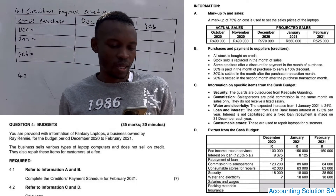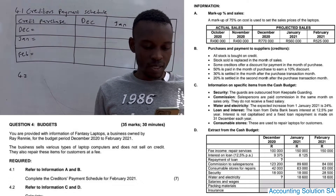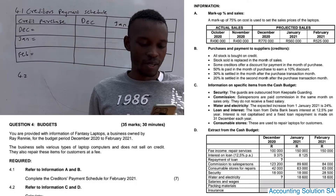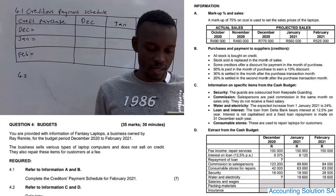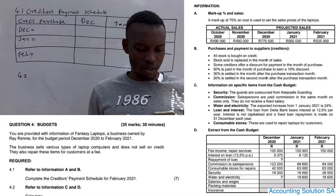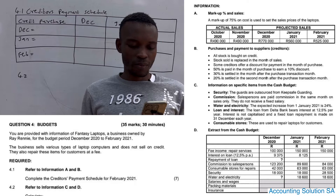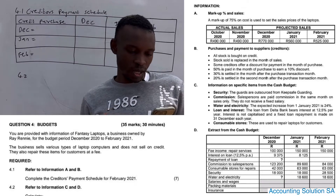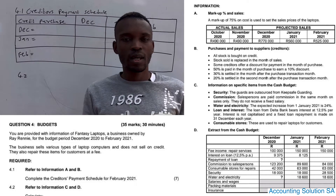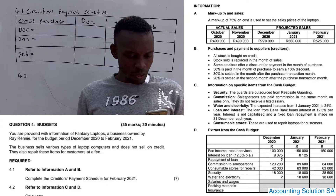You are provided with the information of Fantasy Laptop, a business owned by Ray Rainy, for the budgeted period December to January. The business sells various types of laptop computers and does not sell on credit, and they also repair items for customers at a fee. Required 4.1: refer to information A and B, number one — complete the creditors payment schedule. We also going to touch 4.2, which is related to calculations that are going to be recorded under a cash budget.